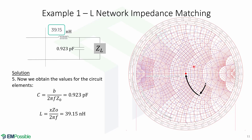Here in the Smith chart you can see the summary of the navigation between the points to get the matching network. The last step is to obtain the values for the circuit elements — in this case the capacitor is going to have this value and the inductor has this value.